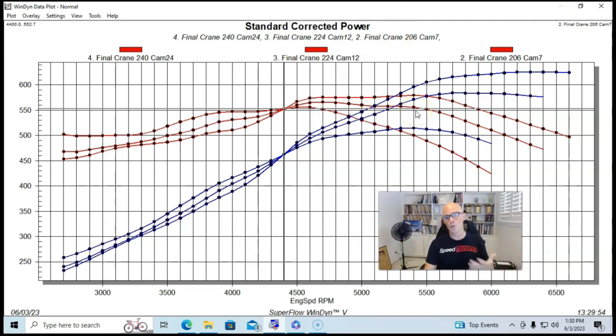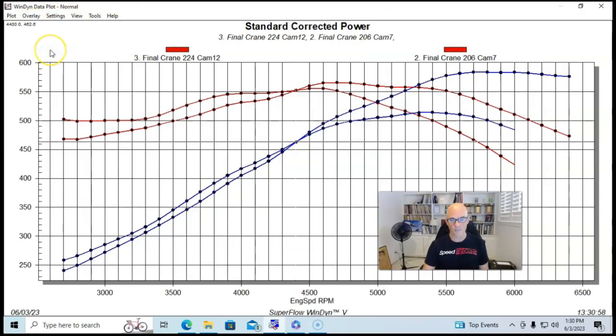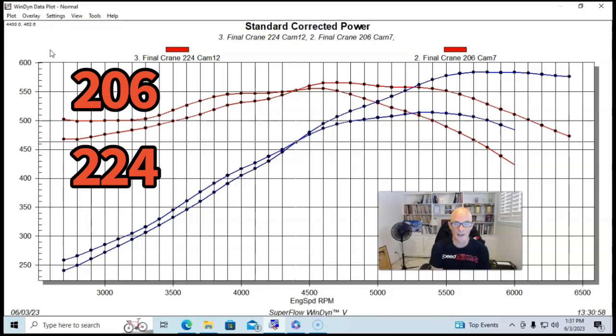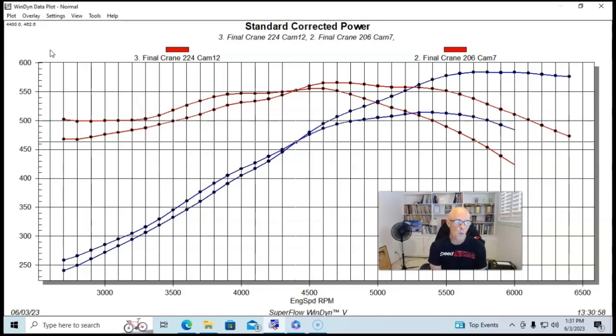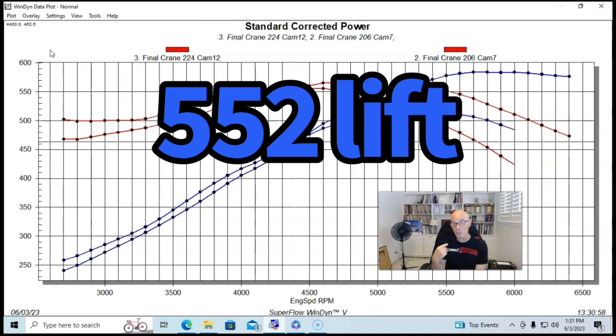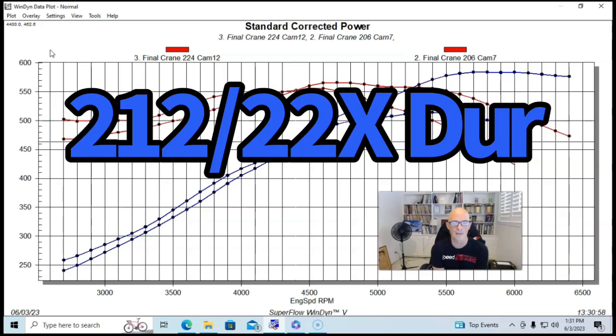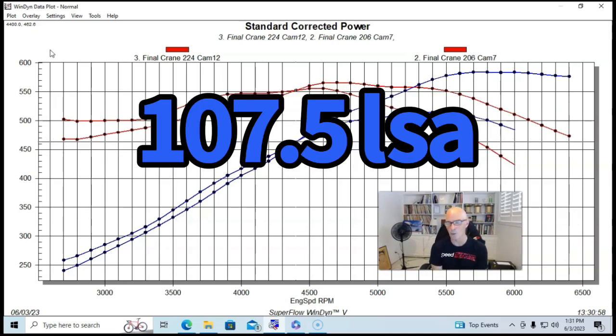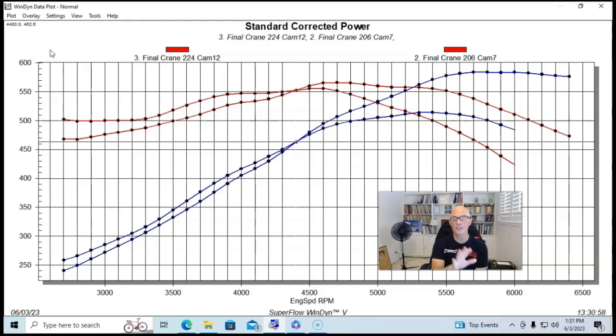But here's the camshaft that I wish we would have tried. But unfortunately, when I ran this test, it was not available. So if we look and we're going to get rid of our big camshaft here. So if we look at these two, this is our 206 and our 224 cam. So if one of them has more torque down low and one of them has more horsepower up top, what camshaft would we pick between a 206 and a 224 cam to make maybe the best of both worlds? Here's the camshaft that I wish I would run.